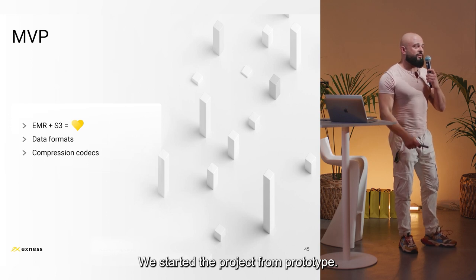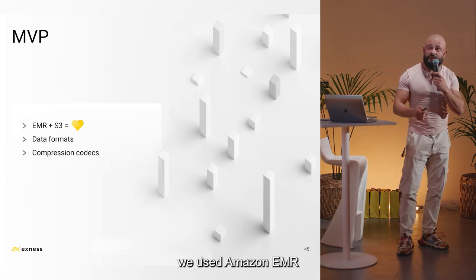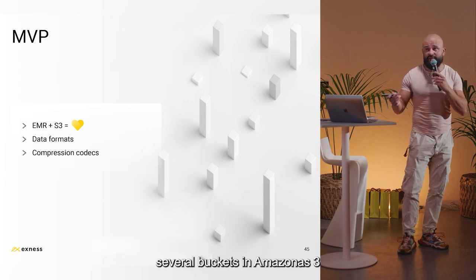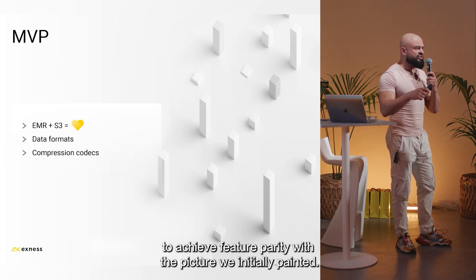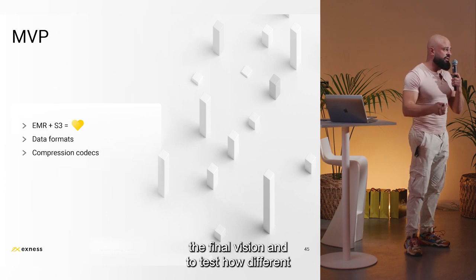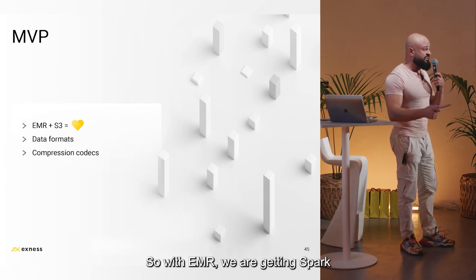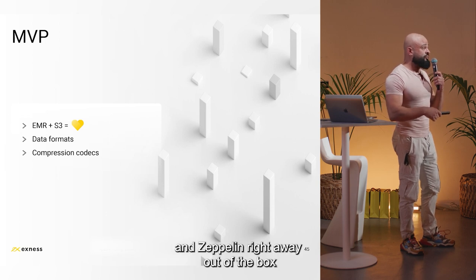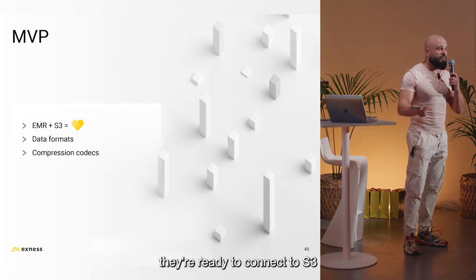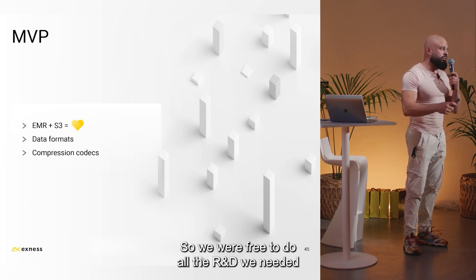We started the project from a prototype running in the cloud — we used Amazon EMR, deployed an EMR cluster, and created several buckets in Amazon S3 to achieve feature parity with the architecture we envisioned. We did this first to present the final vision to colleagues and to test how different components of our stack integrate with each other. With EMR we get Spark and Zeppelin out of the box, immediately ready to connect to S3, relational databases, or any other data source. This freed us to do all the R&D we needed.